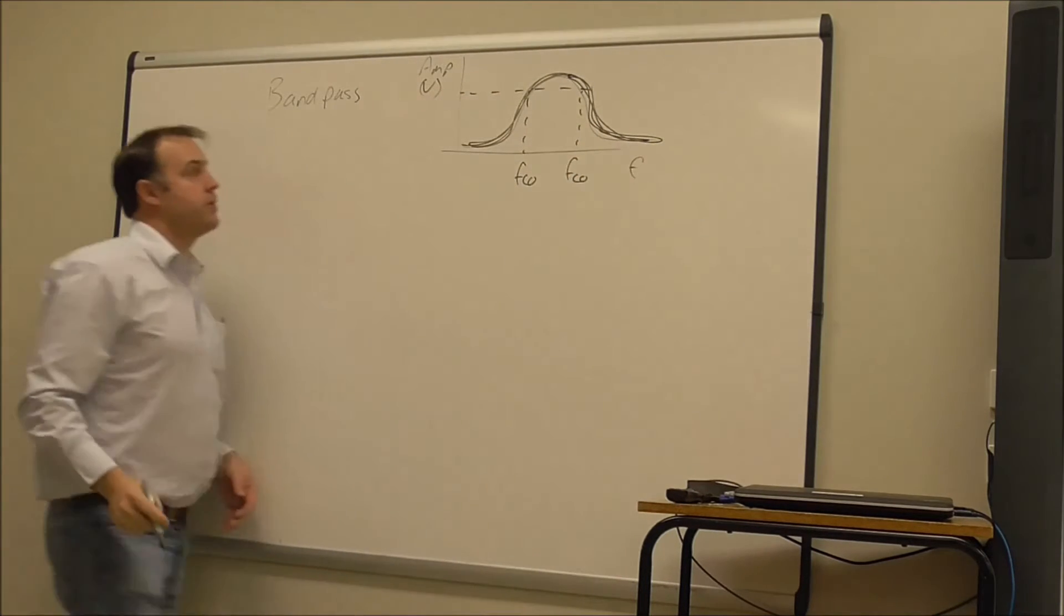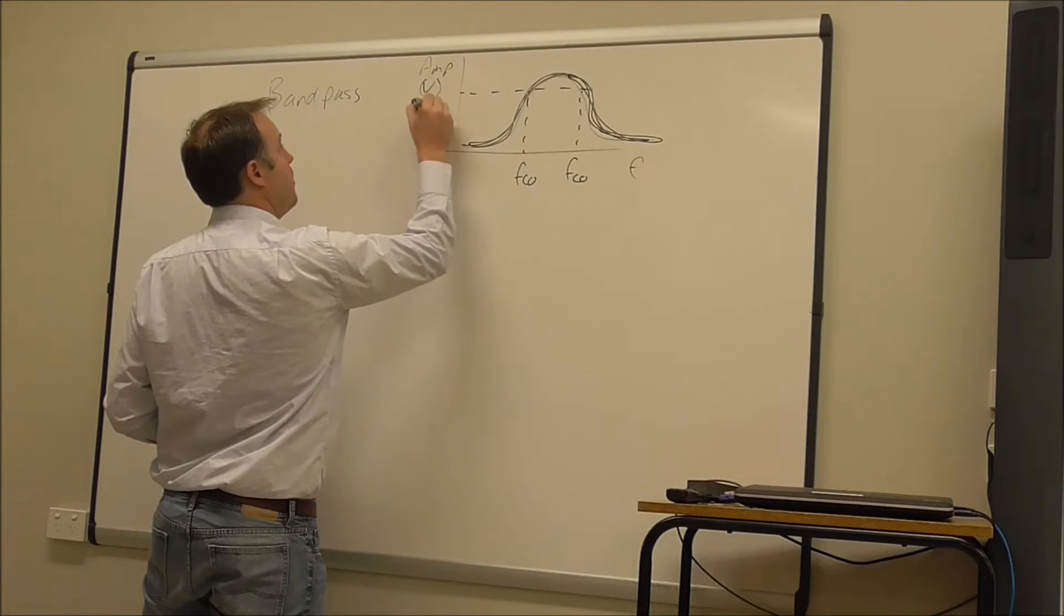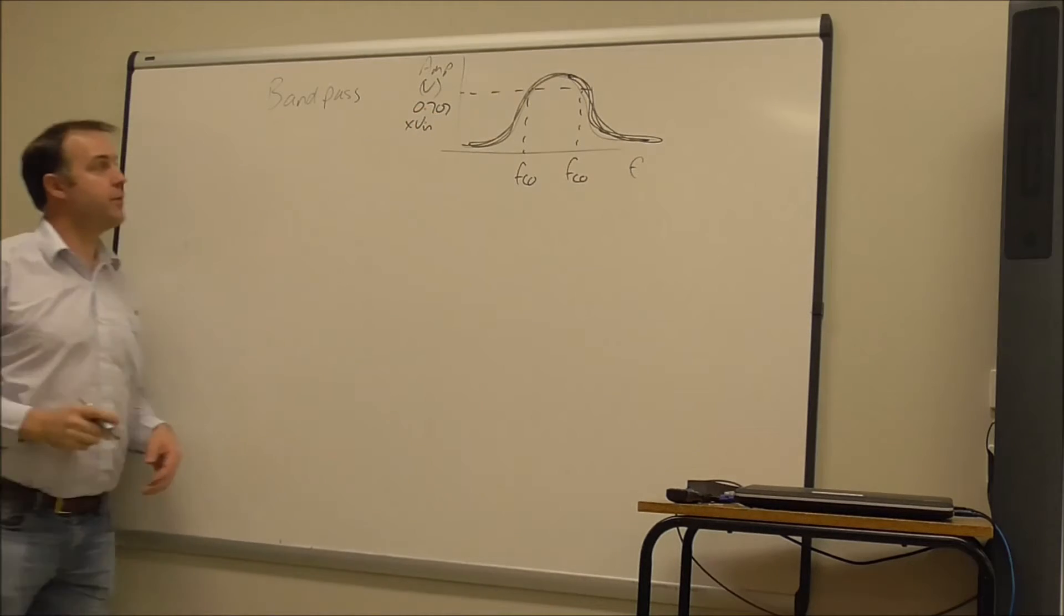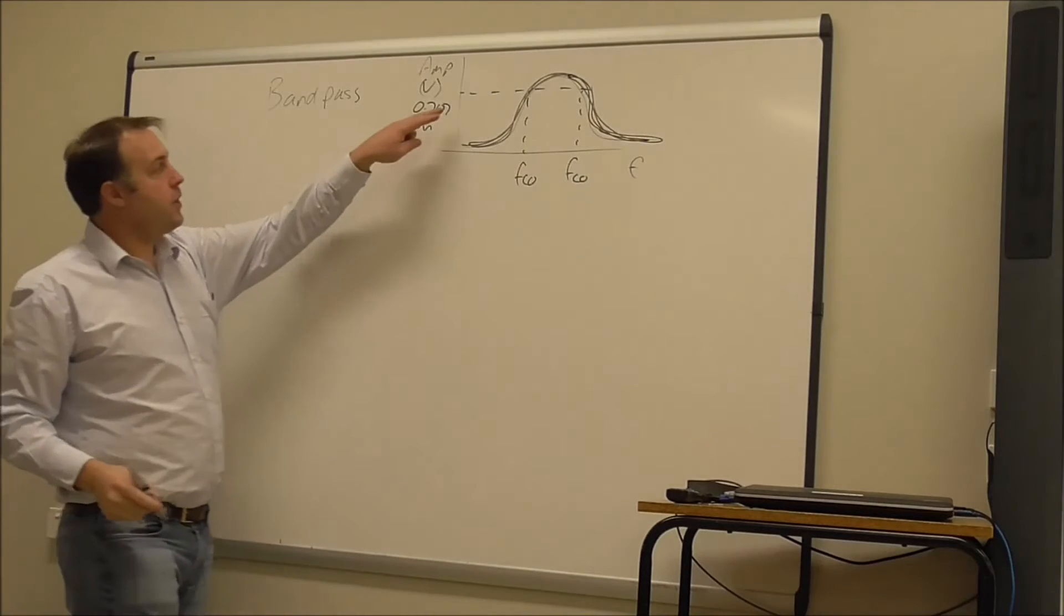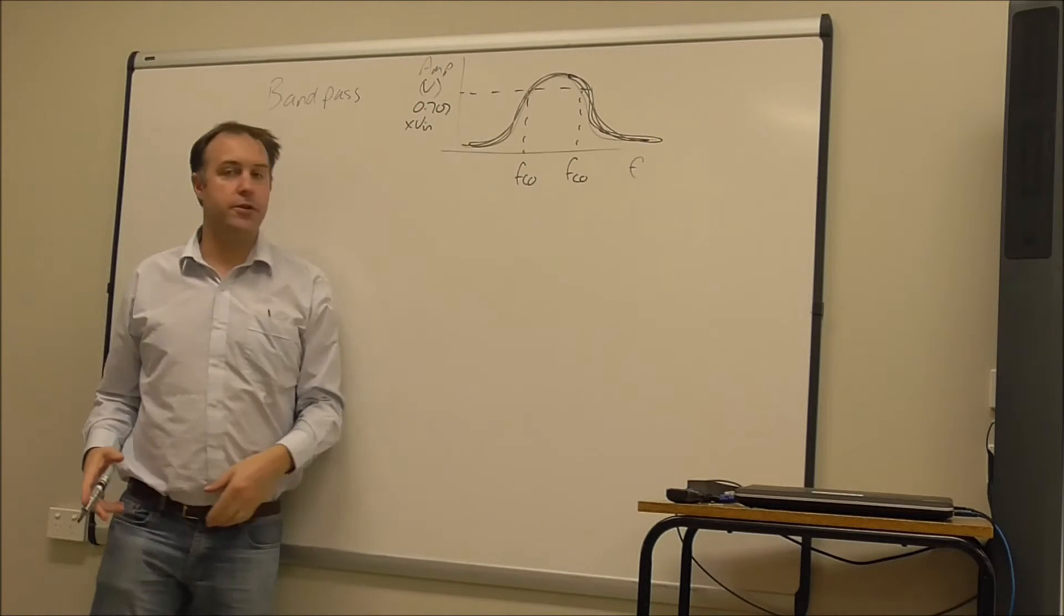If you remember, the cutoff frequencies occur where the output is 0.707 times the input voltage. So whatever the input voltage is, the output at the cut off frequency is 0.707.